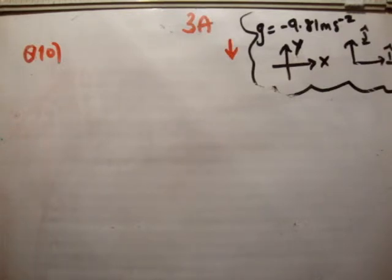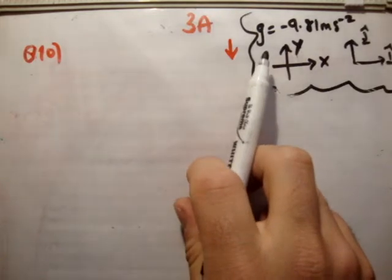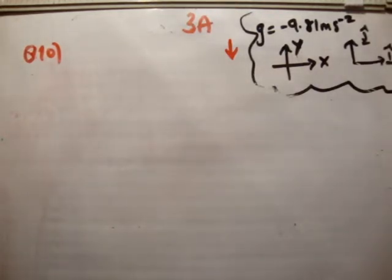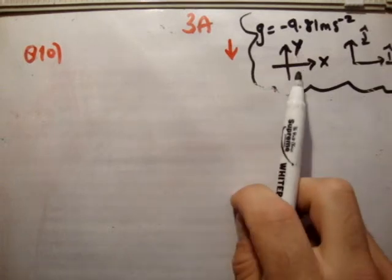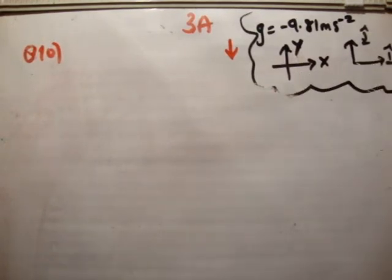Before I start, once again, we have g defined at negative 9.81 meters per second squared, the Cartesian or xy plane, and also the usual unit vectors i hat and j hat.